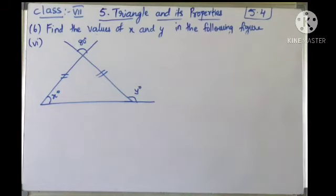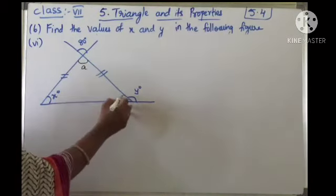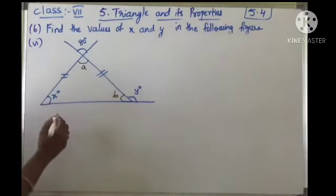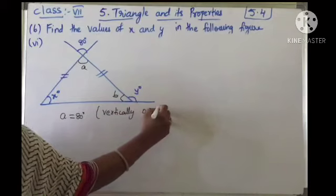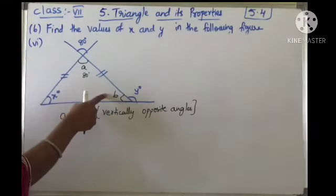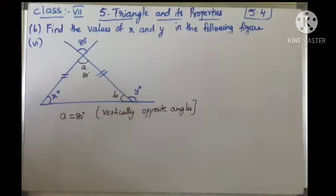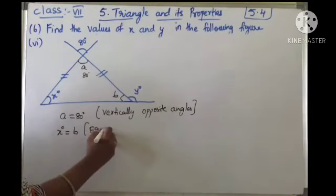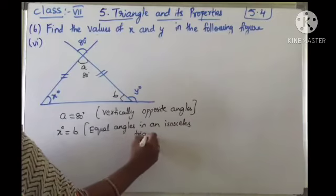Now the last figure in this set. x is the interior angle, y is the exterior angle, and 80 is also an exterior angle. We need to find x and y. Let the unknown angles be a and b. Using vertically opposite angles: a equals 80 degrees. This is an isosceles triangle, so the equal angles give x degrees equals b — equal angles in an isosceles triangle.